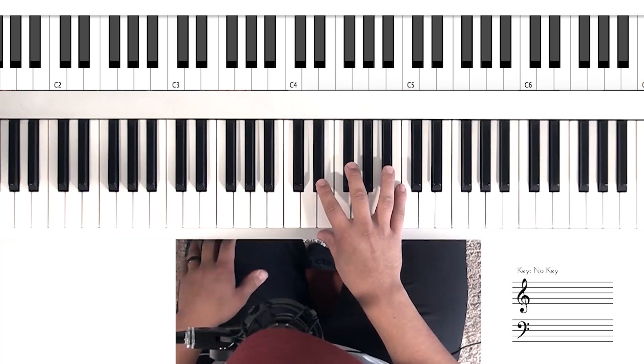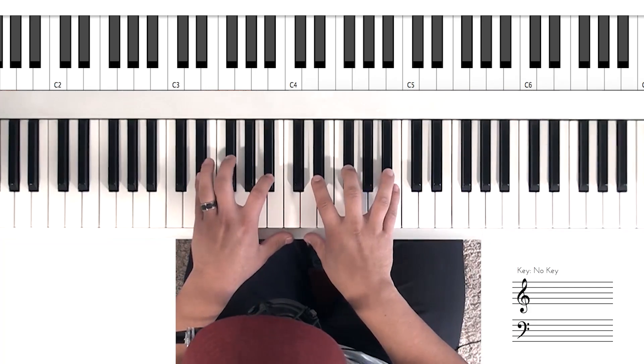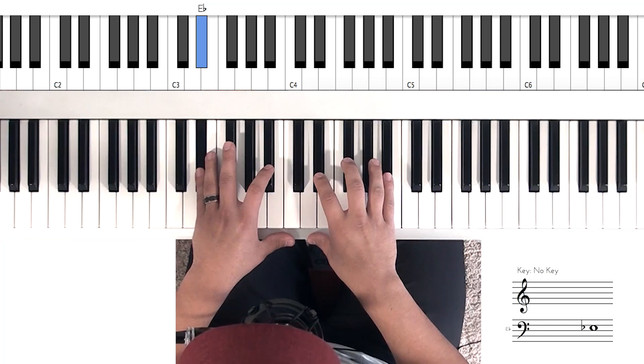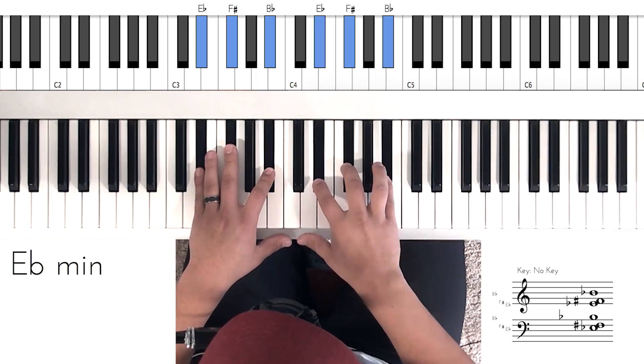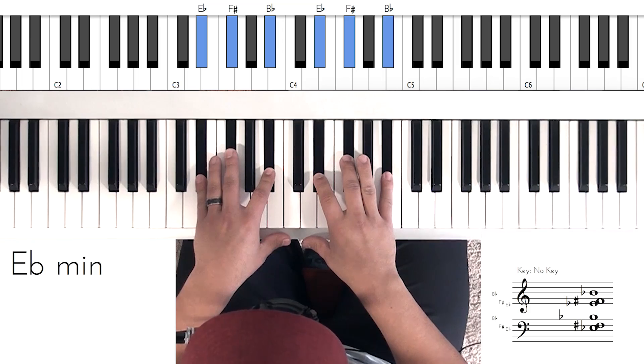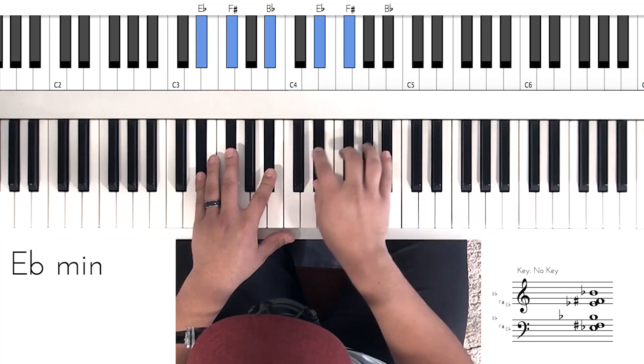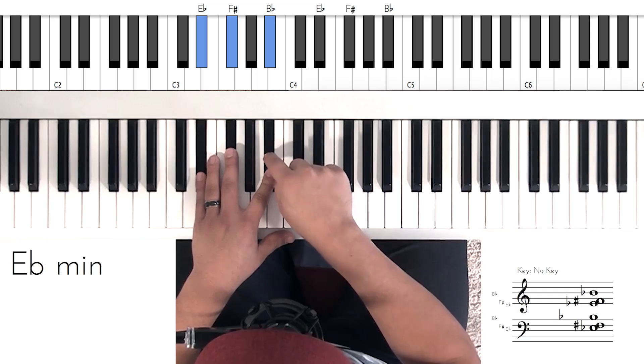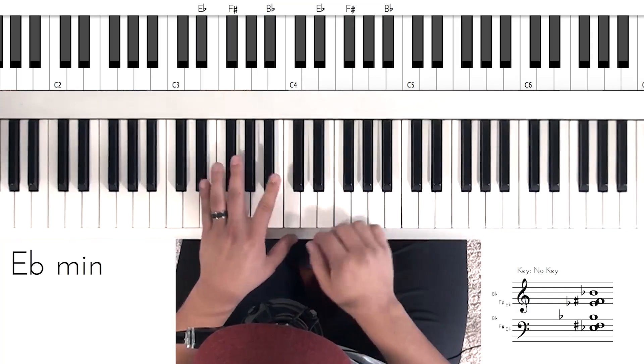We're in the key of E flat minor, so there's going to be lots of black notes. The first chord is going to be an E flat, an F sharp, a B flat, and then your right hand is going to mirror your left hand. Notice how I'm using rhythm here on this fifth interval on this B flat. So I hit together, right, left, and then you'll switch.